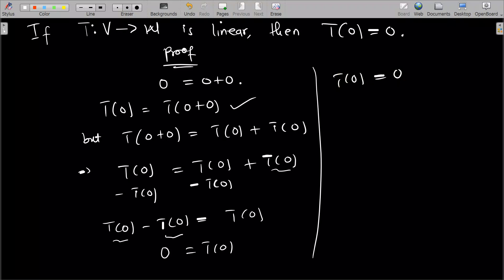So, in every linear transformation, if T is linear, then the transformation of 0 gives you 0 all the time, right? That is the reason why we say that T(0) is always equal to 0 for every linear transformation.